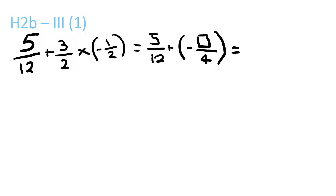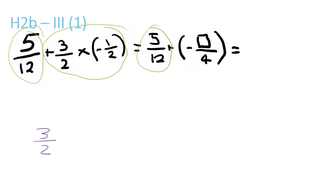They've already given you the first part, so 5/12 and 5/12. You've got to transfer it like equals 5/12, and then for this part you've got to multiply. So 3 over 2 — there's a minus — put it over there, times 1 over 2, equals 3 times 1, which is 3 over 2 times 2, which is 4, and don't forget the minus.